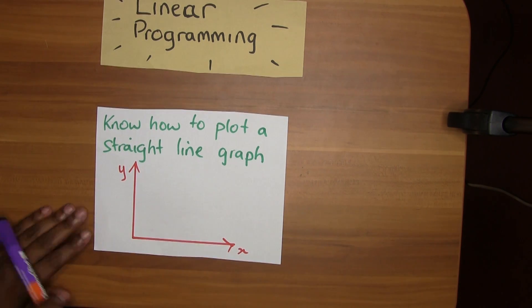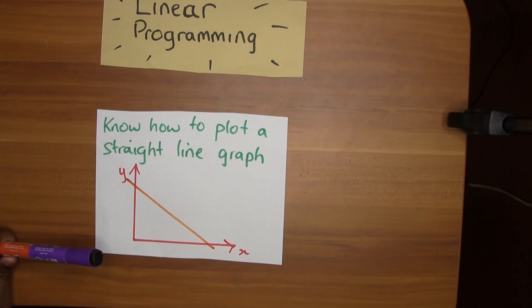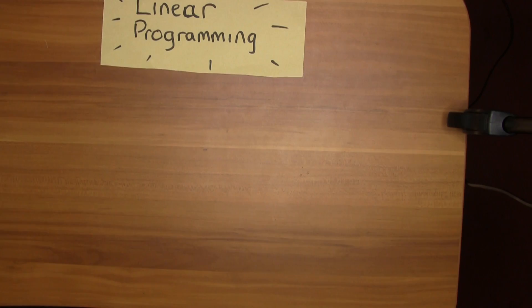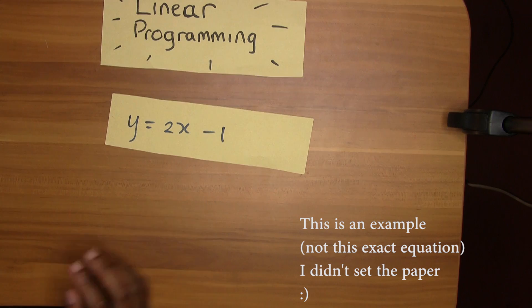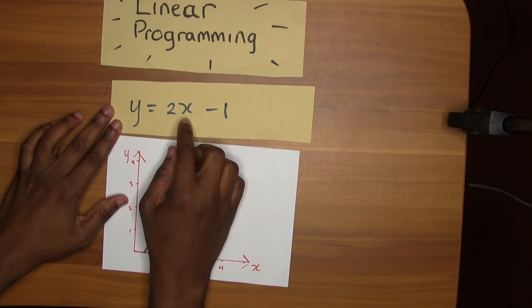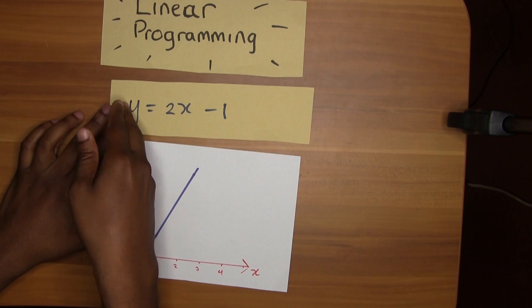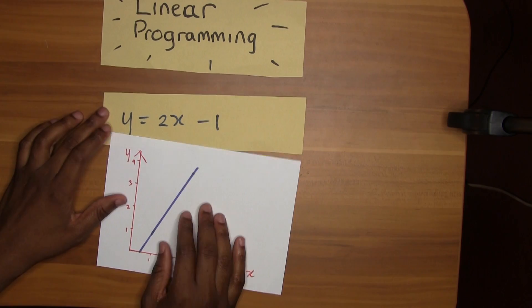The third thing you need to know is how to plot a straight line graph. Let me go through the four main types of equations you'll see in a linear programming question. First, the traditional equation of the line: y equals 2x minus 1. To draw this line, simply plug in values of x — quick values like 1 or 0 — get the corresponding value of y, do it twice, connect two points, and draw your line.